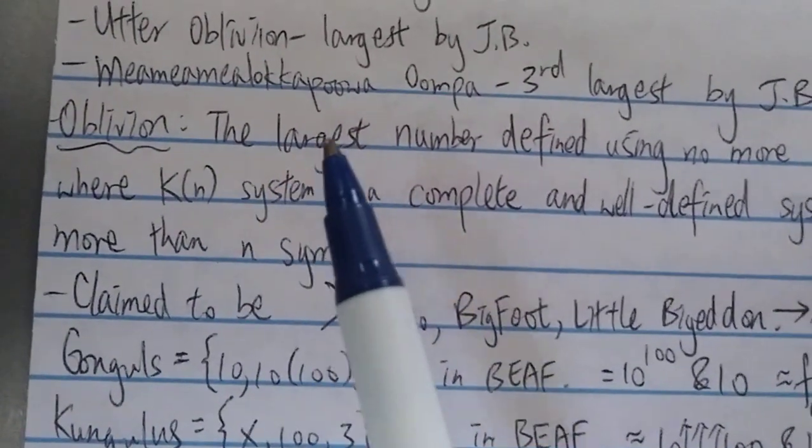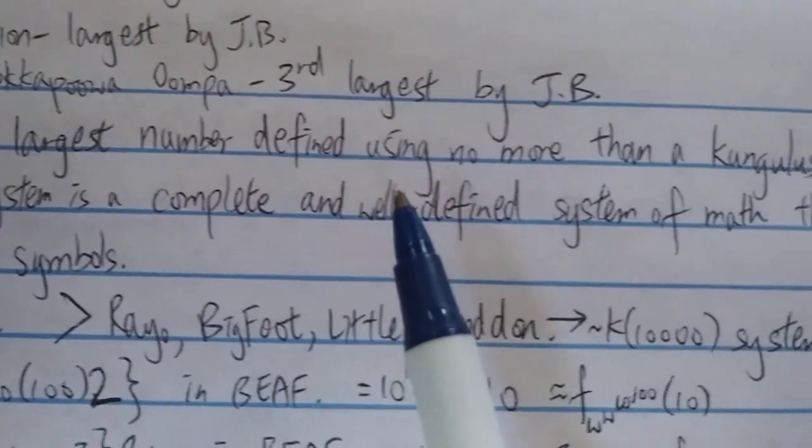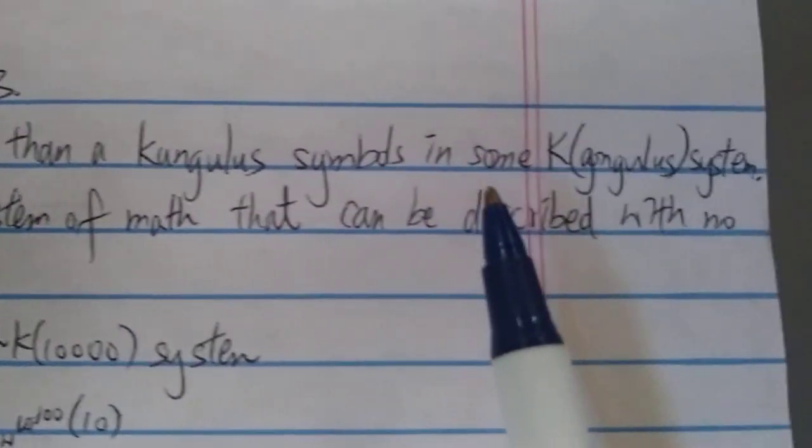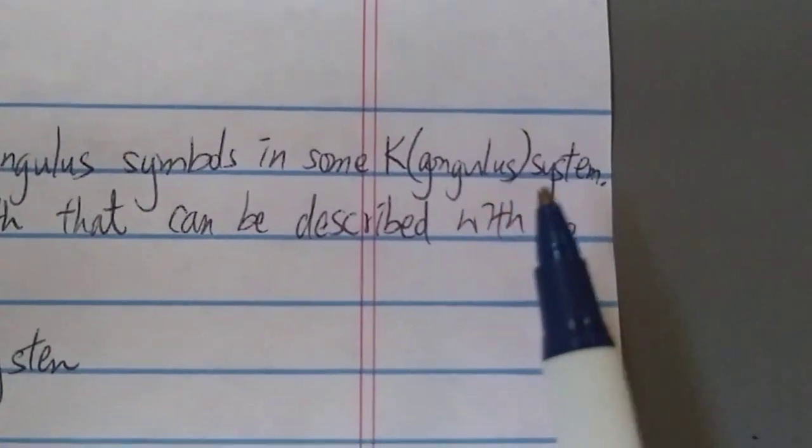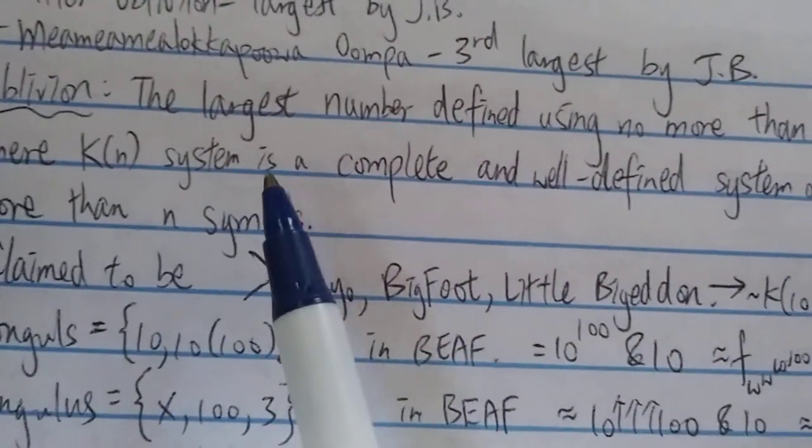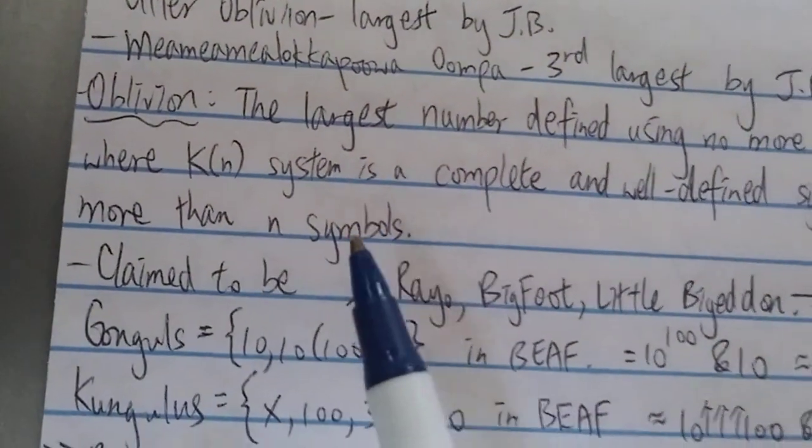Oblivion: what is its definition? So basically it's the largest number defined using no more than a congulous symbol in some K-congulous system, where K(n) system is a complete and well-defined system of math that can be described with no more than n symbols.